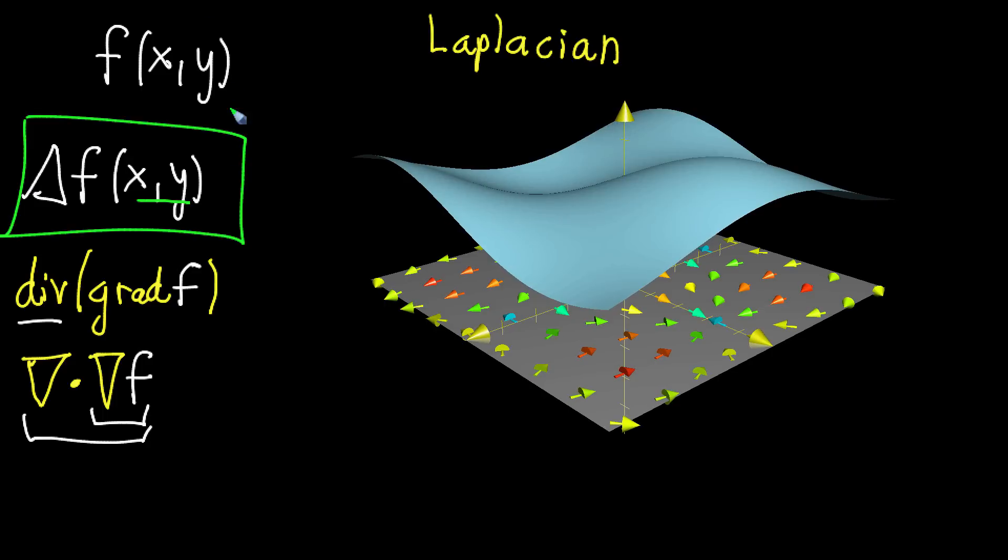And this should feel kind of analogous to the second derivative in ordinary calculus. When you have some kind of graph of just a single variable function, the second derivative will be low, it'll be negative at points where it kind of looks like a local maximum. But over here, the second derivative of x would be positive at points that kind of look like a local minimum. So in that way, the Laplacian is sort of an analog of the second derivative for scalar-valued multivariable functions. And in the next video, I'll go through an example of that.